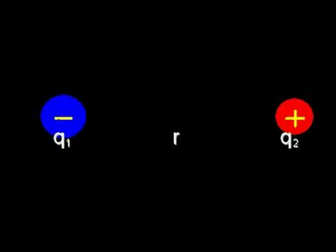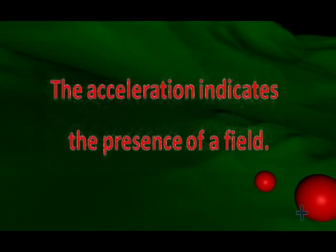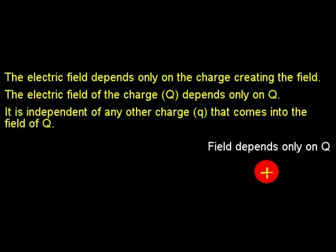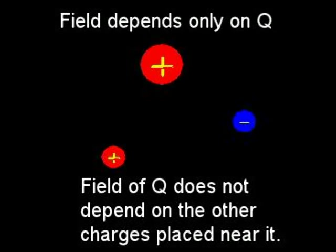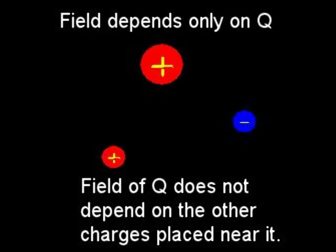If a charge is placed near another charge, it will experience an electric force because of the field created by the first charge. If a small charge feels an electric force when placed in any empty space, we can conclude that an electric field must exist in that place. The electric field depends only on the charge creating it; it is independent of any other charge that may come into the field of Q. Mathematically, the electric field due to a charge Q is defined as the force that a unit charge small q experiences if placed in the field at a certain distance from the charge. The field is simply the force per unit charge.